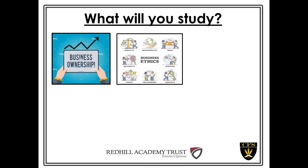We then move on to look at Unit 2, which is Influences on Business. This unit is all about how external factors such as technology, the economy, the environment and ethics impact the success of the business.